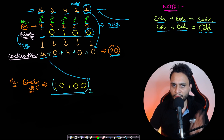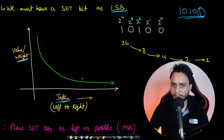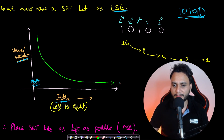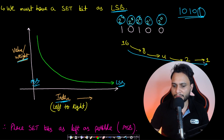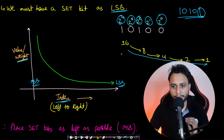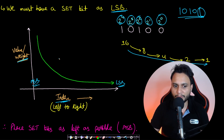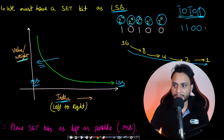Looking at the weightage by index: the most significant bit is on the left and the least significant bit is on the right. As you move from left to right, the weight decreases exponentially — from 2 to the power 4 down through the powers of 2. I've represented this as a graph showing an exponentially decreasing curve. Therefore, to maximize the value, your set bits should be placed as far left as possible.